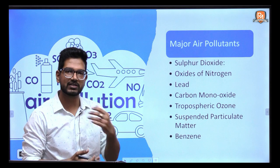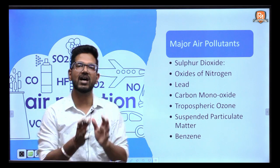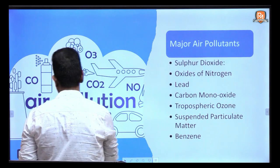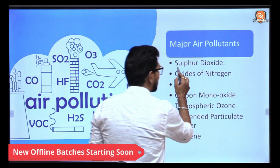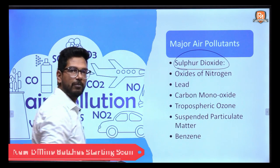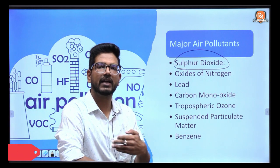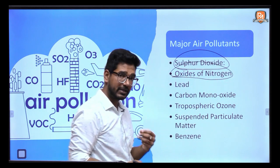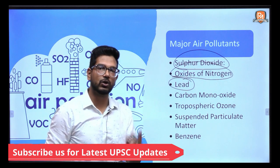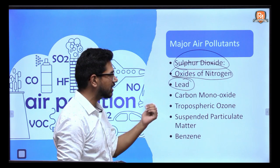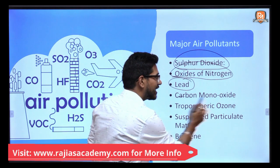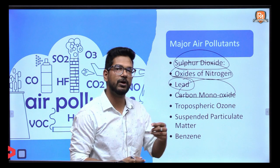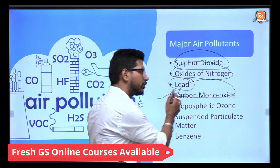What are the major air pollutants? For example, sulfur dioxide can be one of them — it comes from volcanic eruptions or vehicular emissions. Same with oxides of nitrogen. Then there is lead, which comes directly from coal and gas emissions, like from thermal power plants. Carbon monoxide is produced when coal or any fossil fuel burns with a limited supply of oxygen.